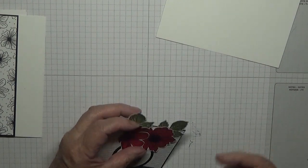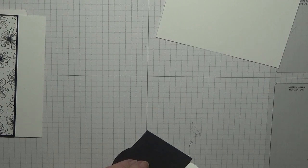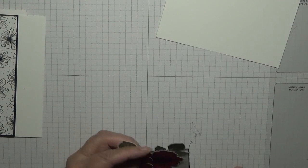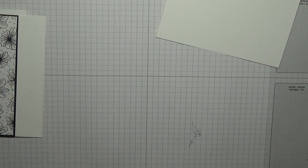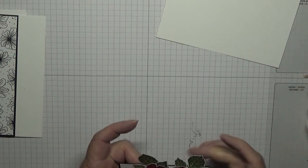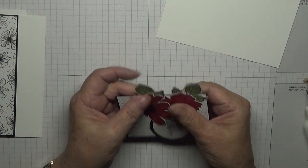And then once that's all stuck down, just pop a bit of glue under your flower to keep it on the card.